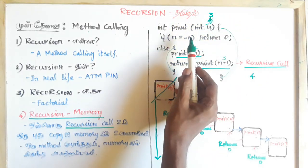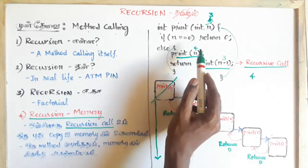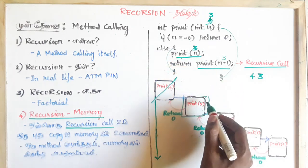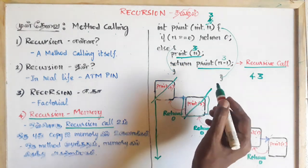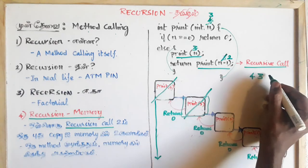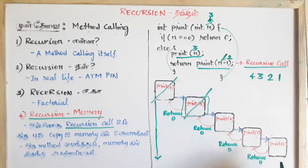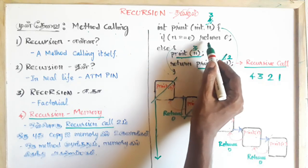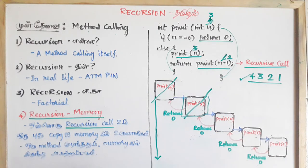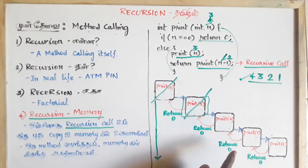The value is 3, which is not equal to 0, so print of 3 executes and then this memory is erased. Then print of 2 runs. The output is 4, 3, 2, 1. If the value is 0, it returns 0 and the program is terminated. The memory will automatically create one method and automatically erase it.